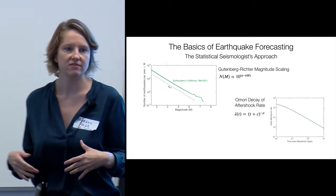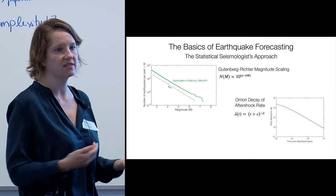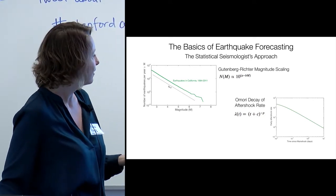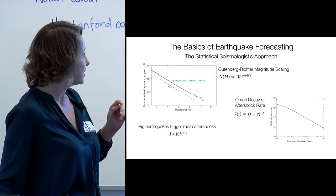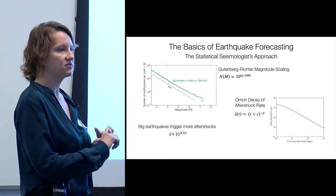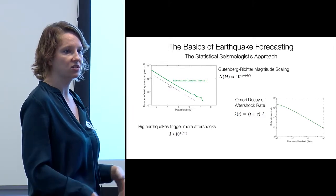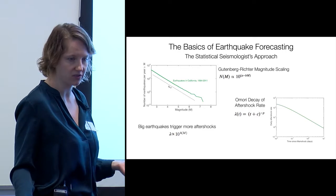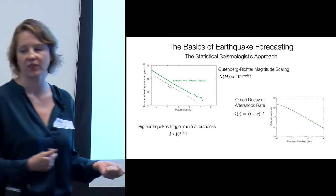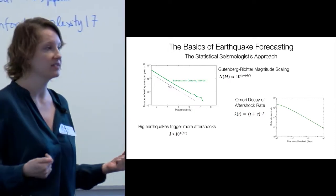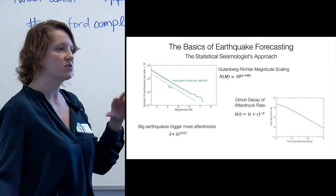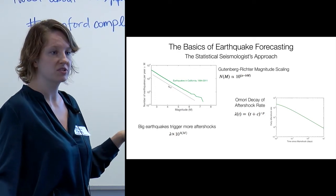So if you have, say, 100 earthquakes the first day, the next day you'll have 50, the next day about 30 or so, and so on. Big earthquakes trigger more aftershocks than smaller earthquakes, about a factor of 10 for each magnitude unit. So magnitude seven triggers 10 times the earthquakes as magnitude six. Not only are big earthquakes more damaging because they release more seismic energy, they're also more damaging in terms of the aftershocks they can potentially produce.